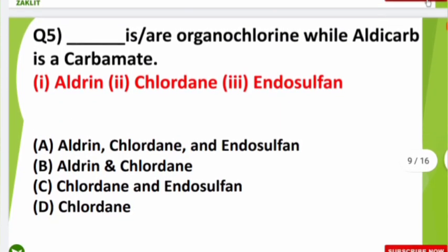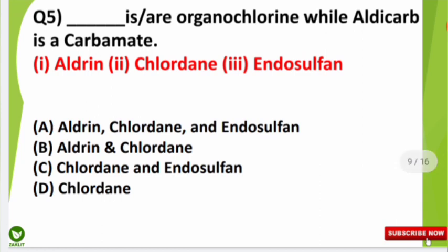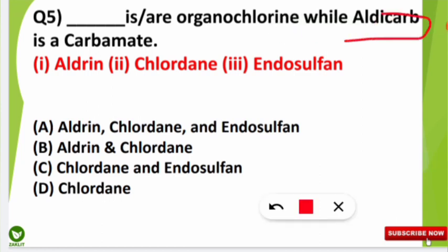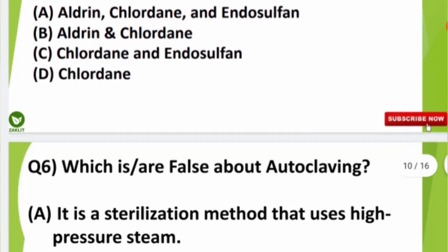The fifth question asked which are organic chlorine pesticides, noting that aldicarb is a carbamate pesticide. Option A is correct because Aldrin, Chlordane, and Endosulfan are all examples of organic chlorine pesticides, which have chlorine as a component.